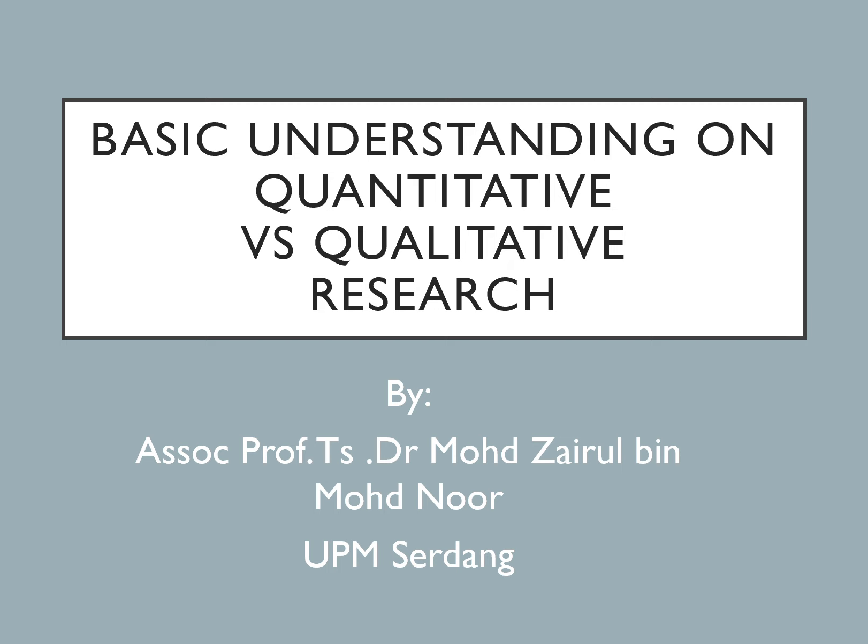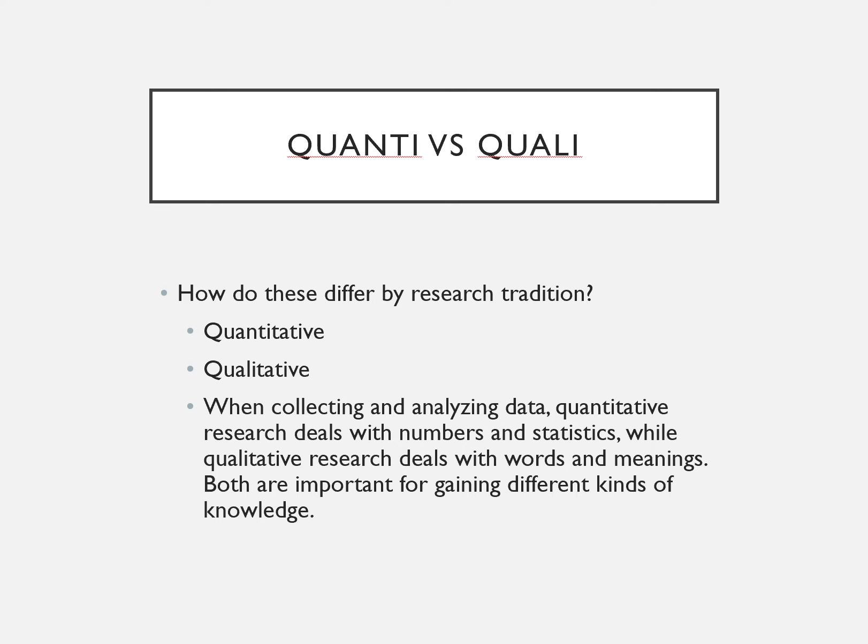So basically what you need to know is that in research we have quantitative, qualitative, and also mixed method. What is quantitative and qualitative, and how do they differ by research tradition? When you talk about collecting and analyzing data that involve numbers and statistics, then it is about quantitative. Qualitative, in other words, deals with words and meanings.